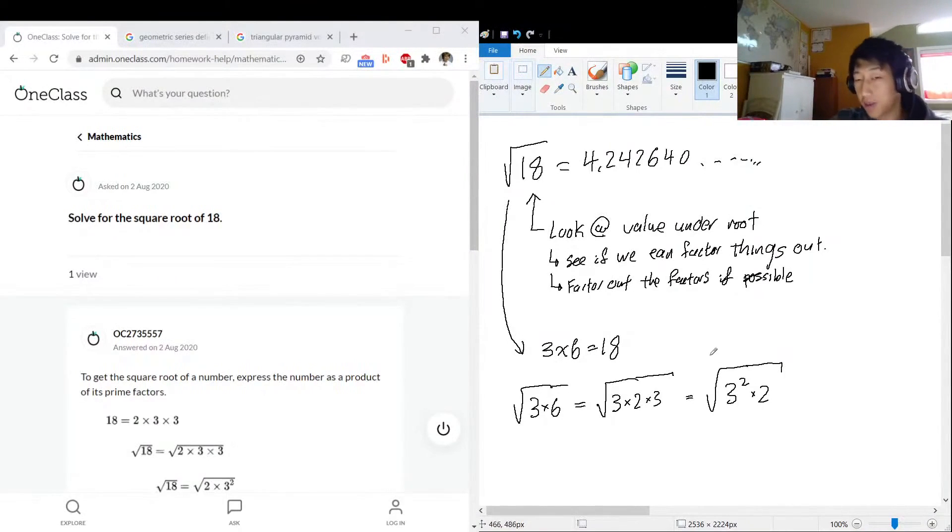And here's the magic part. Anytime you have something squared under the root, under the square root, you can bring it outside and drop the square.